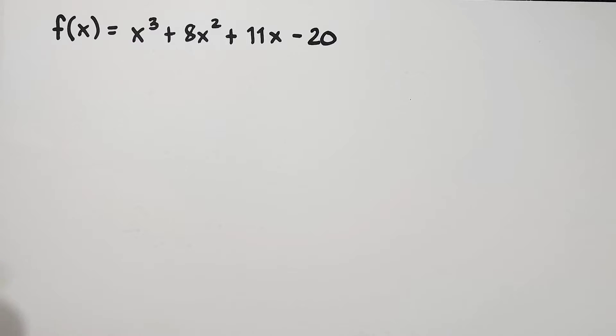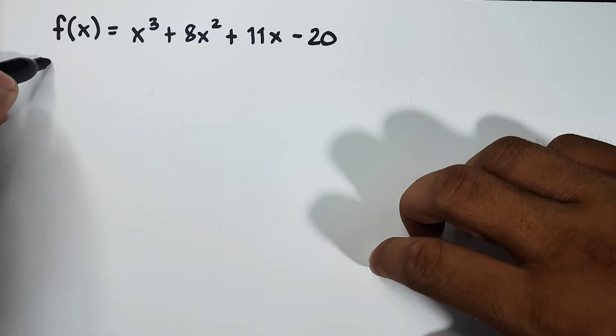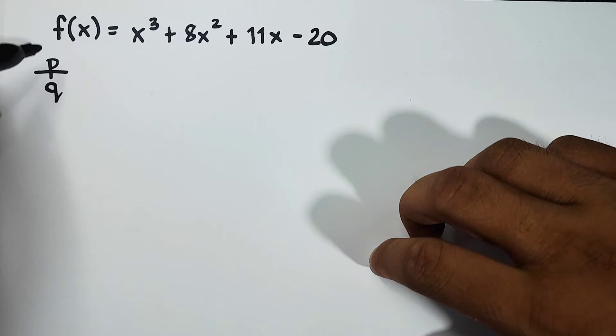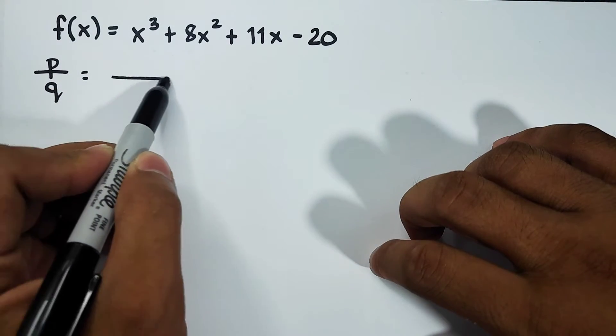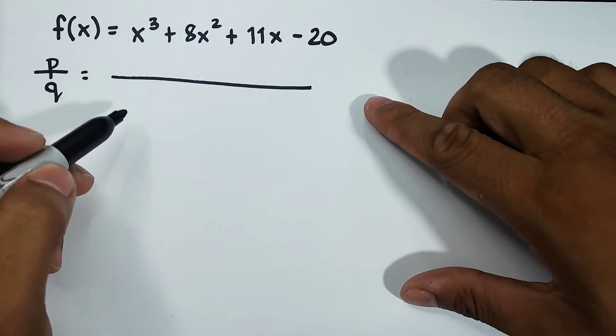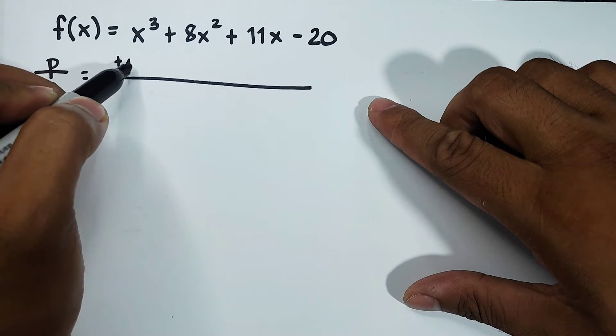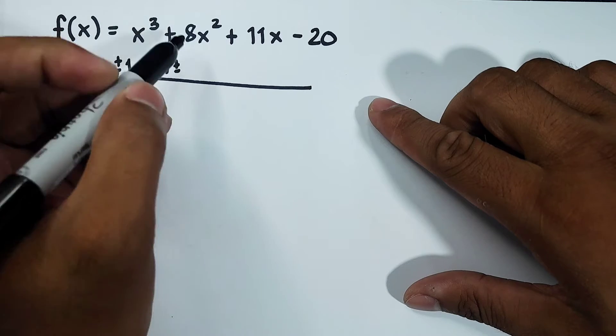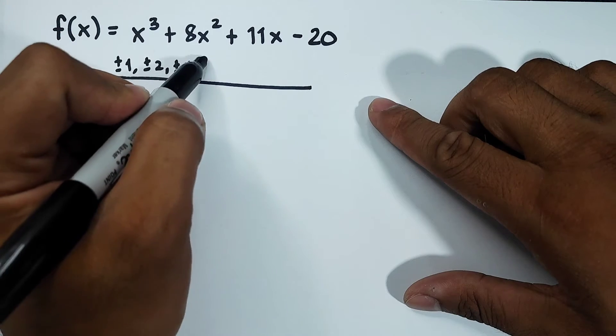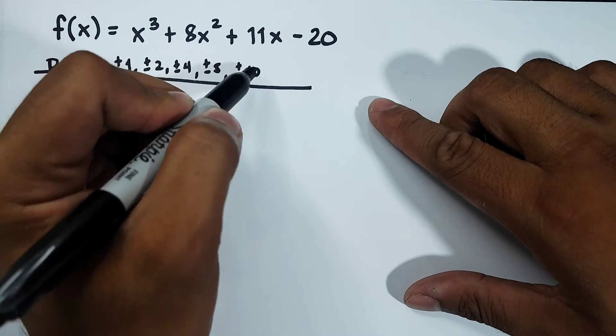So using the rational zero theorem, we need to get the quotient of p over q, wherein p, we get the factors of our -20, the constant. So the factors are ±1, ±2, ±4, ±5, ±10, and ±20.